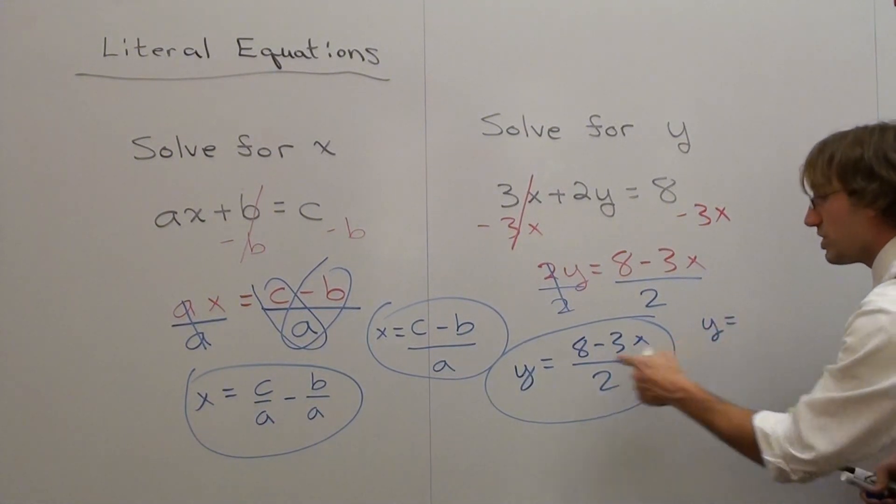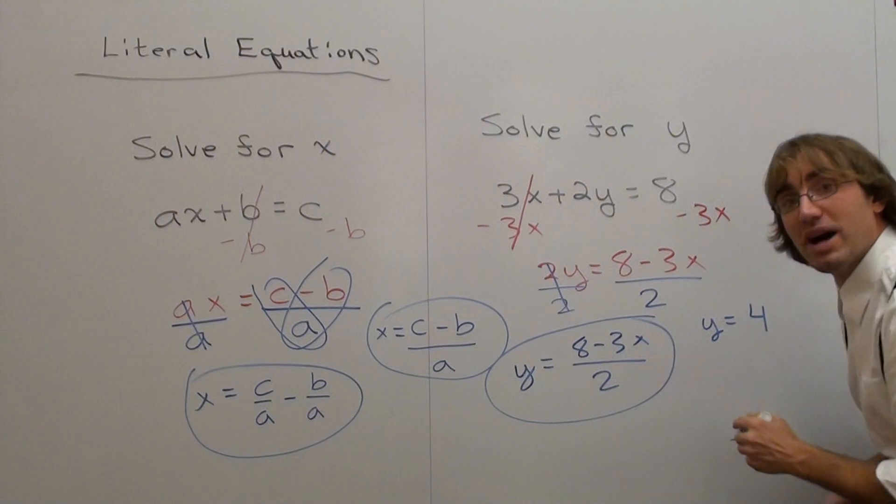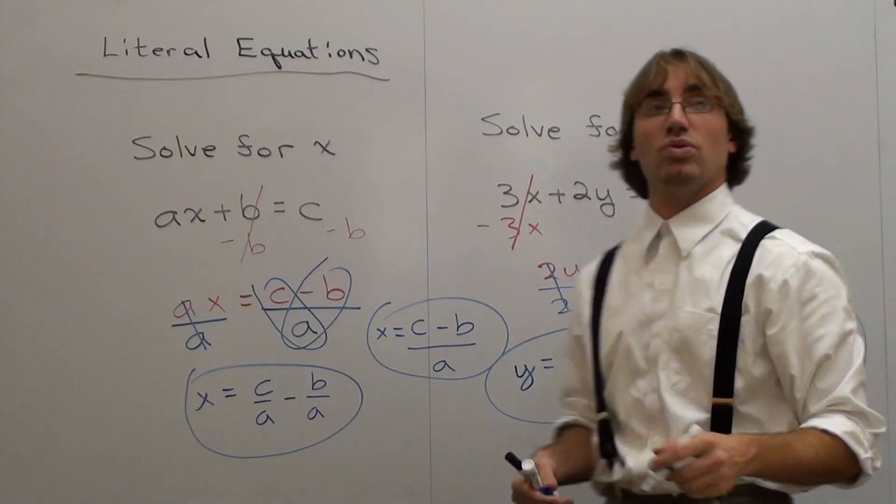We have y equals 8 divided by 2 is 4, and negative divided by positive is negative, and then 3x over 2. So both answers will work, as you can see.